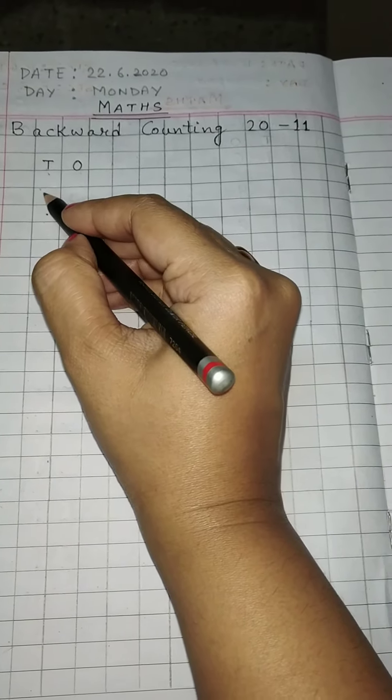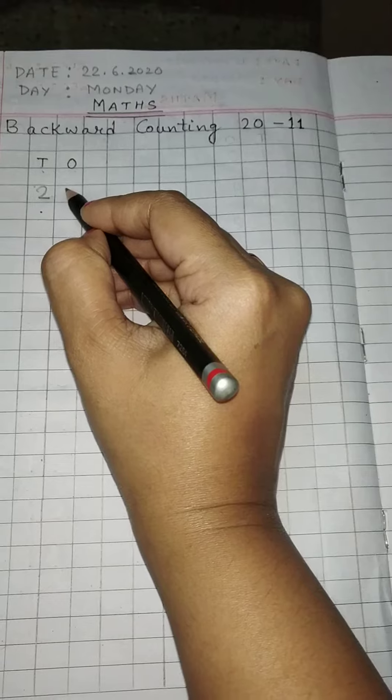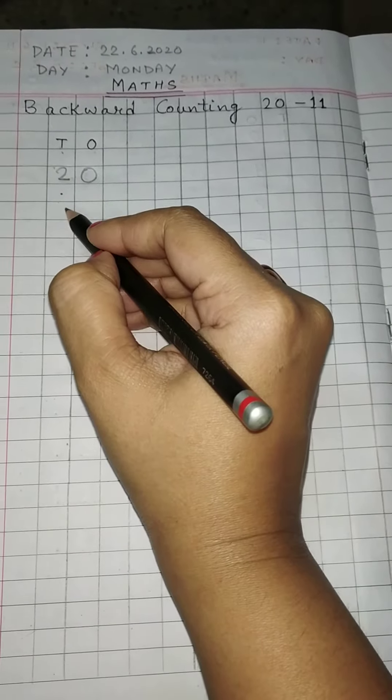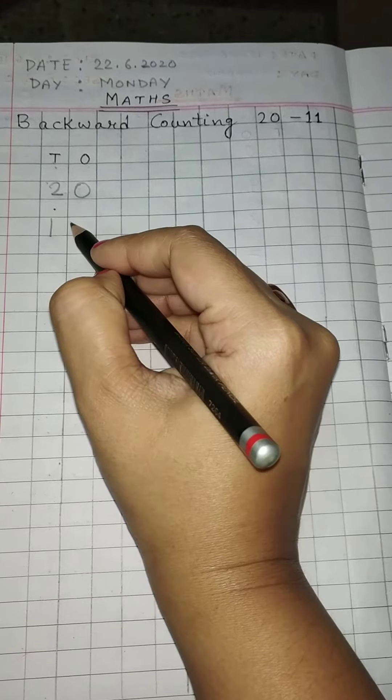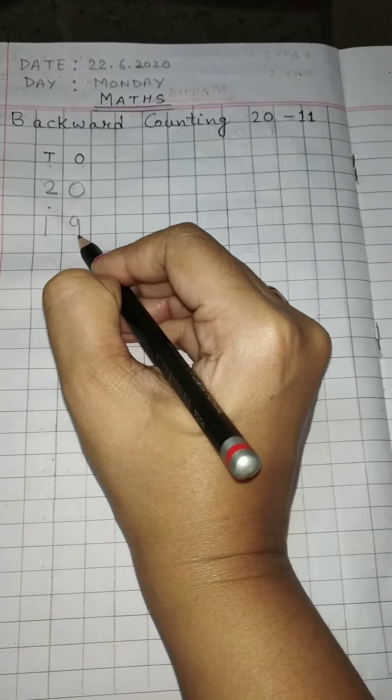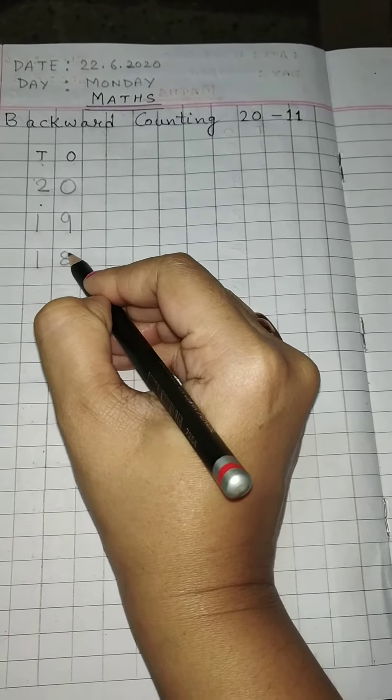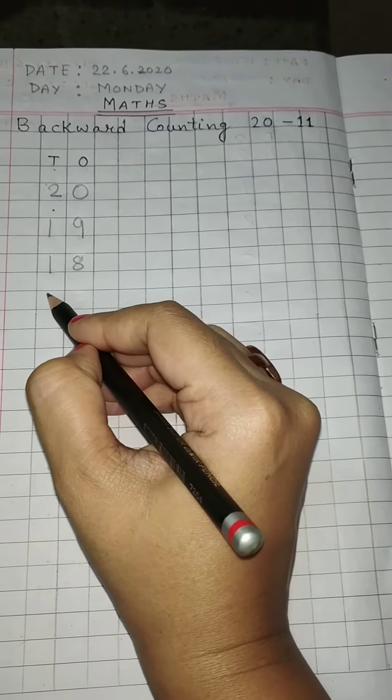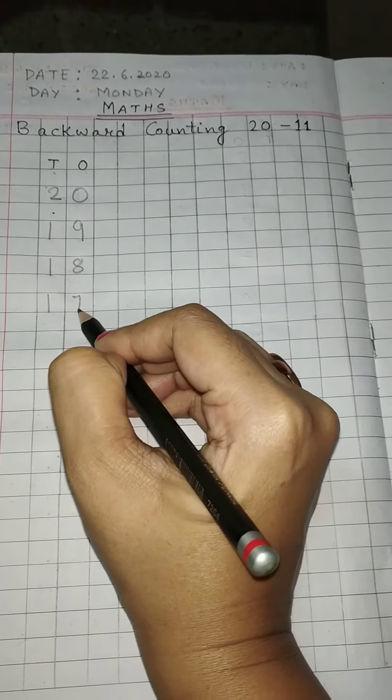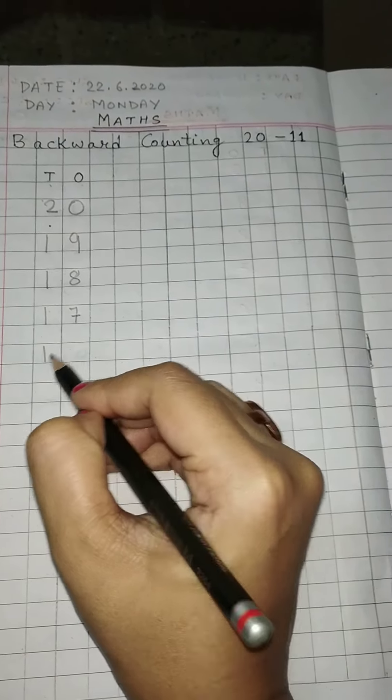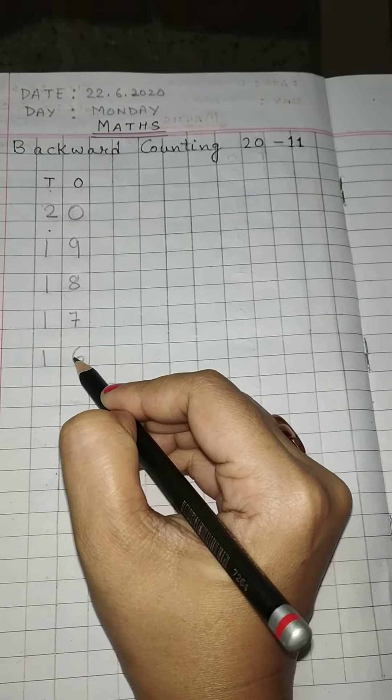Now, 2 0: 20, 1 9: 19, 1 8: 18, 1 7: 17, 1 6: 16.